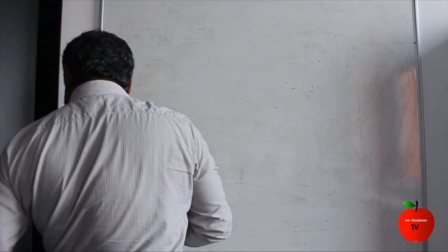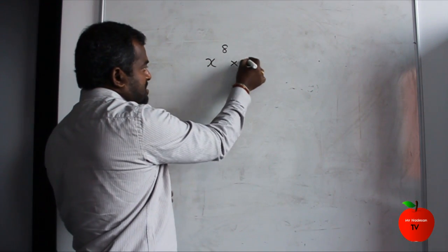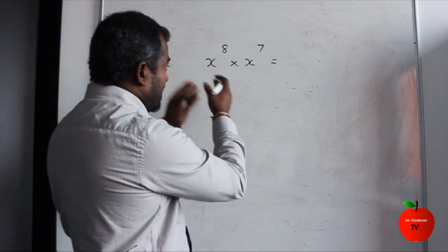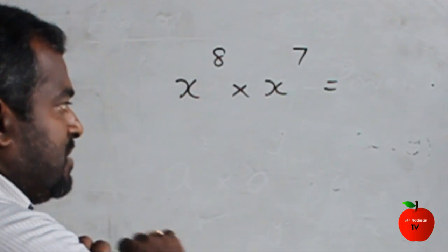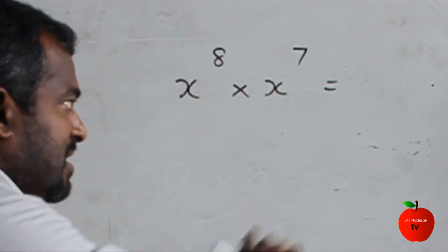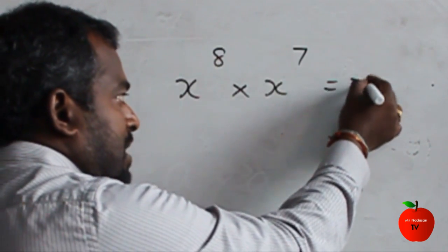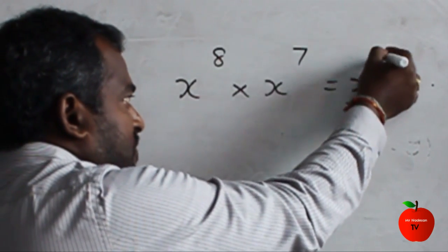The first question: x to the power 8 times x to the power 7. First you should know how to identify the base and the power. The base is x here, the base is x here, and the powers are 8 and 7. So what will happen? We have to add them together. That means 8 plus 7 equals 15.